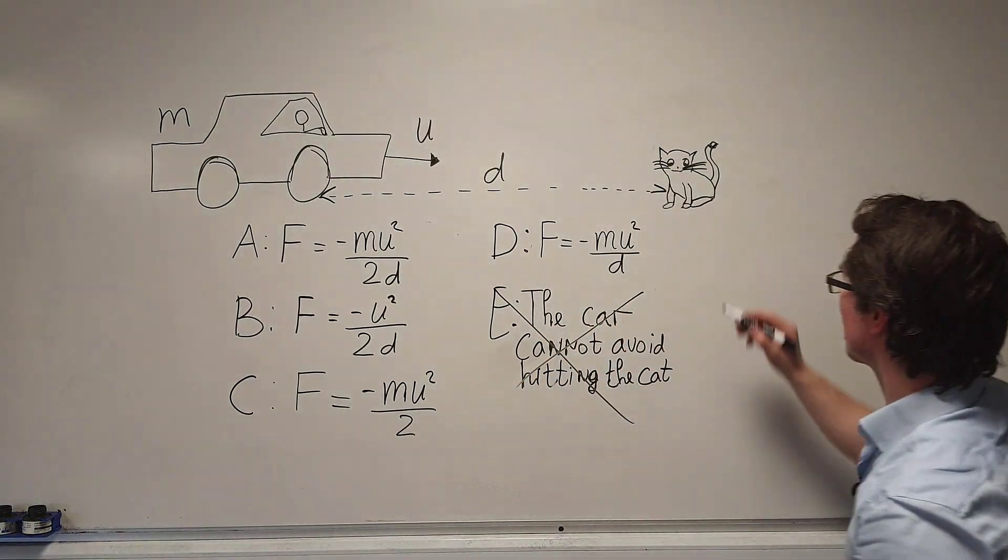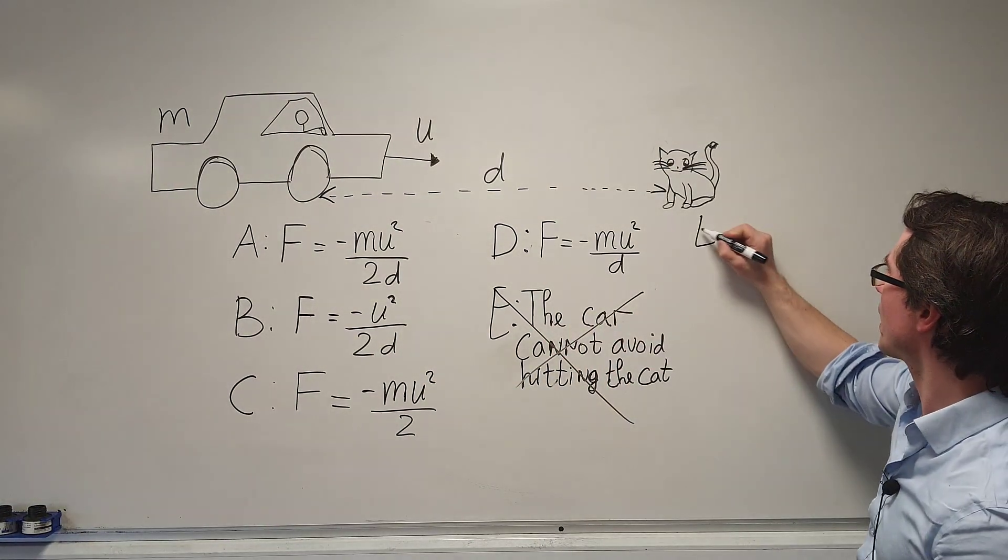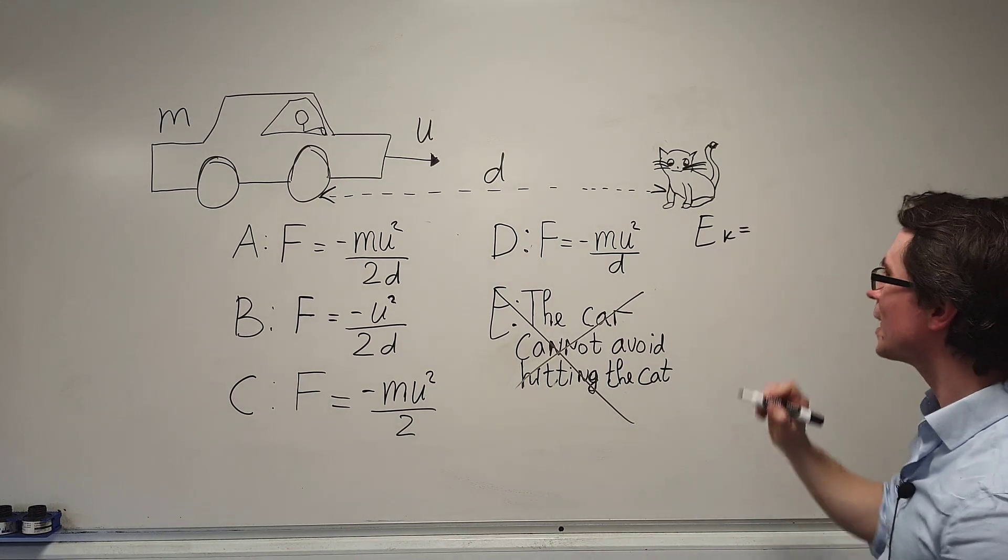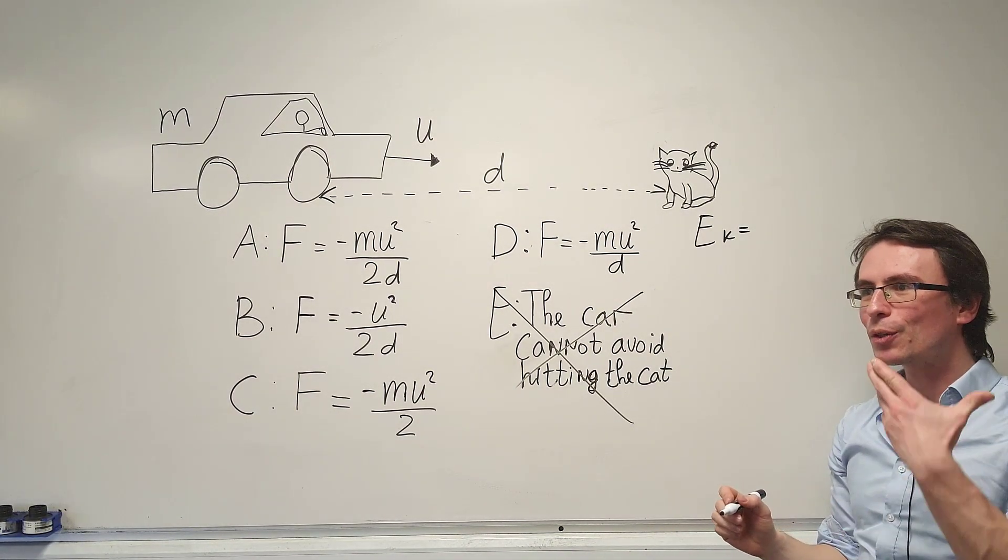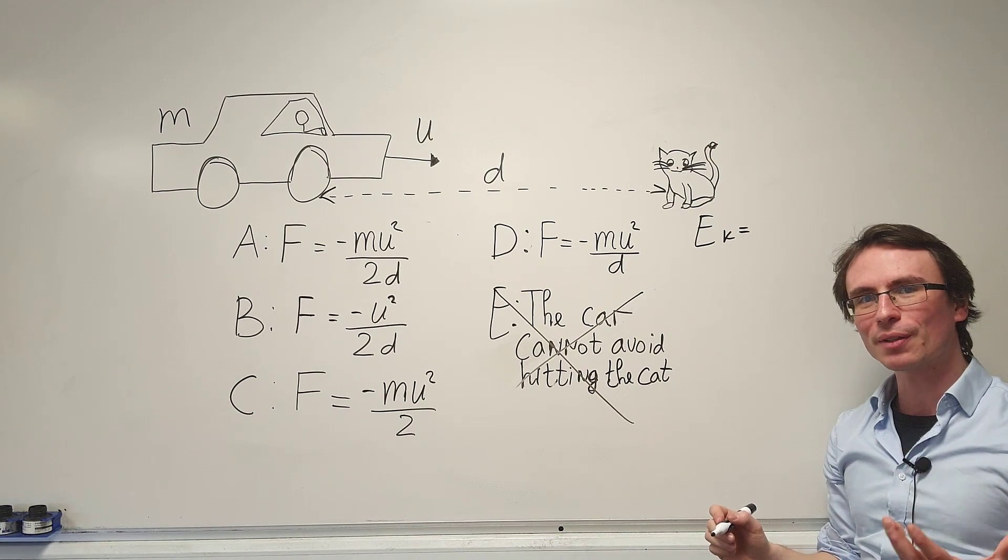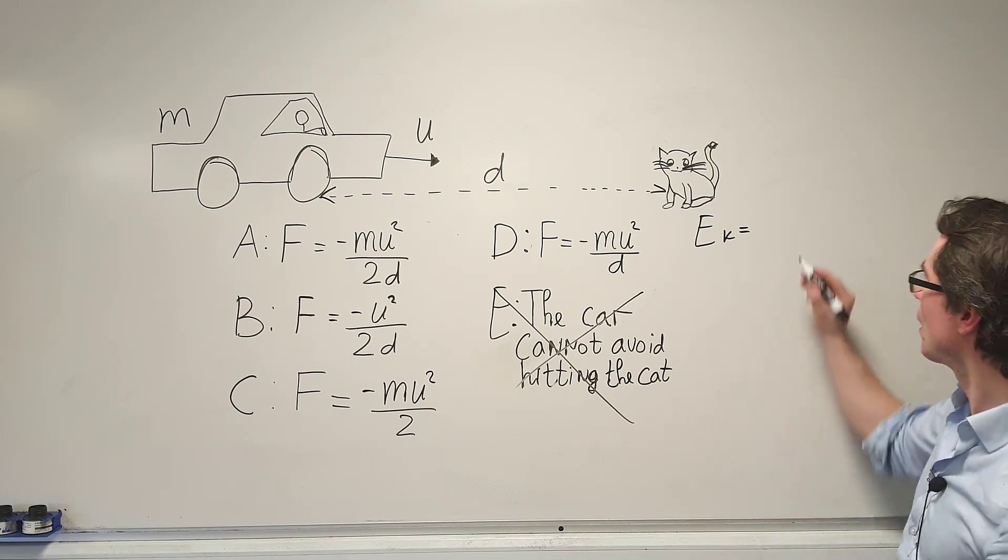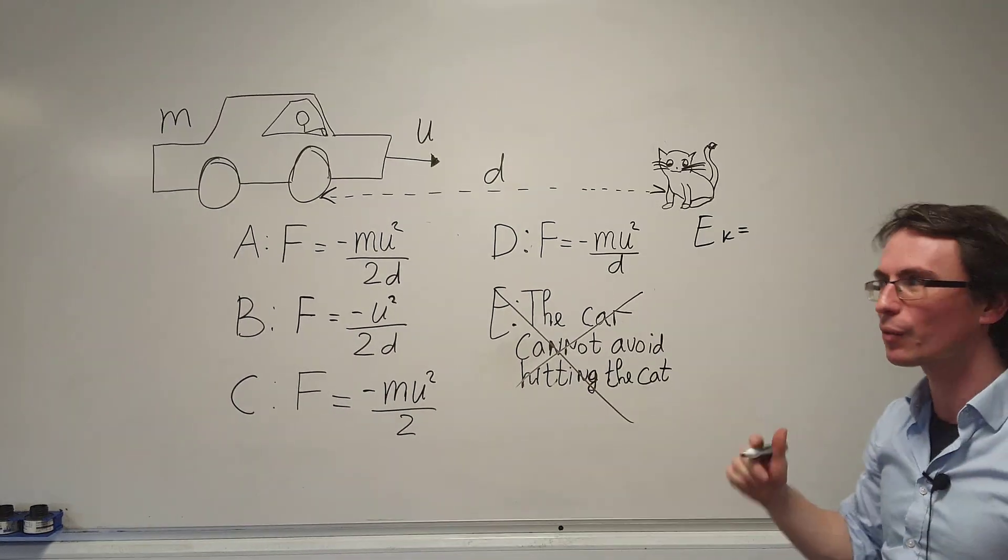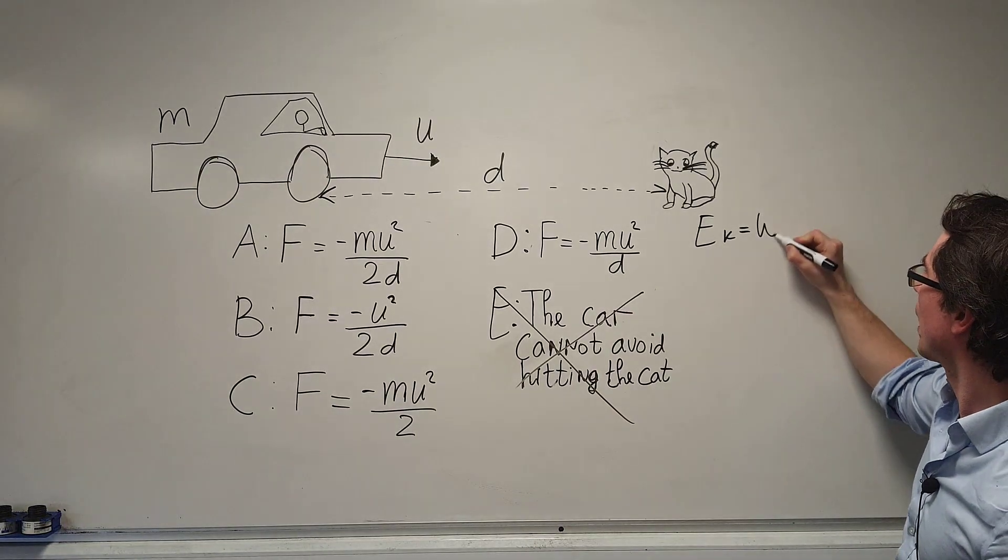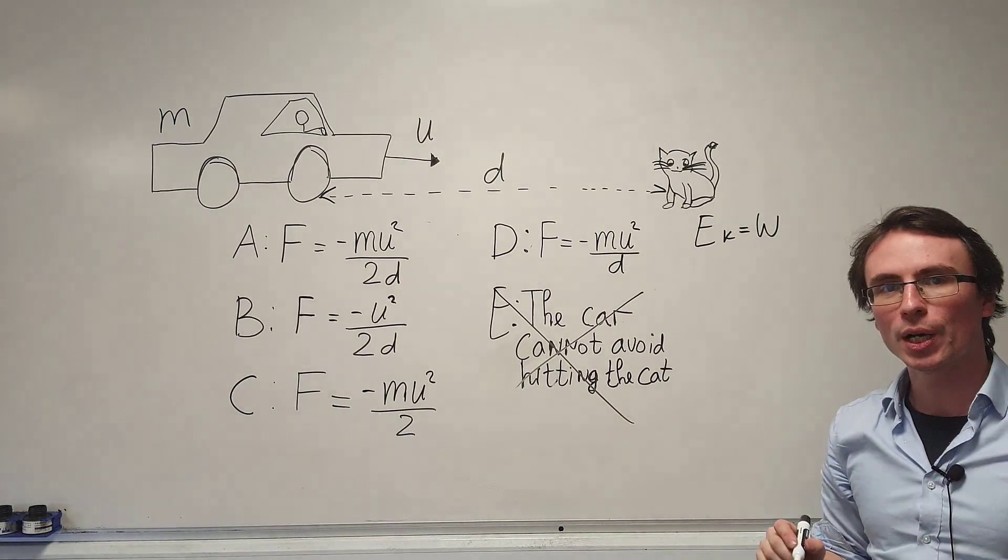The transformation of energy here is that our kinetic energy will need to essentially turn to zero. In order for that to happen, we can use the fact that the kinetic energy or the energy transferred will be equal to the work done.